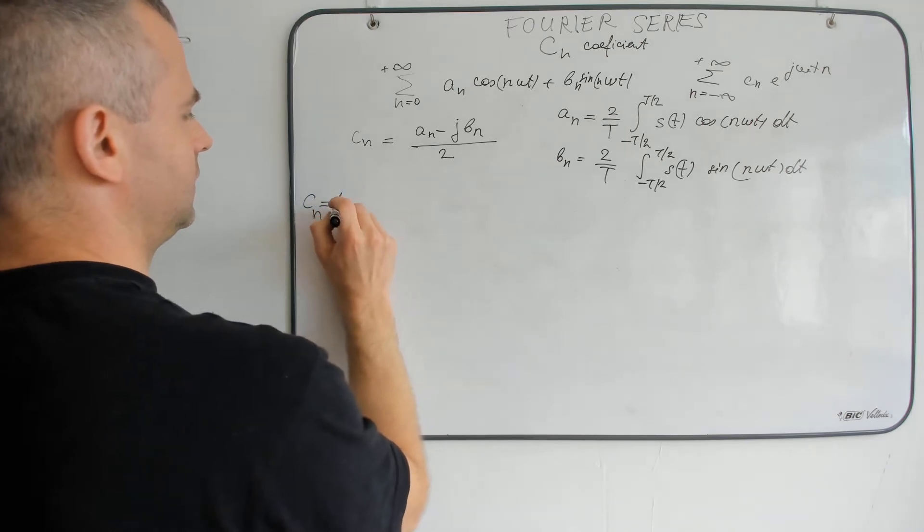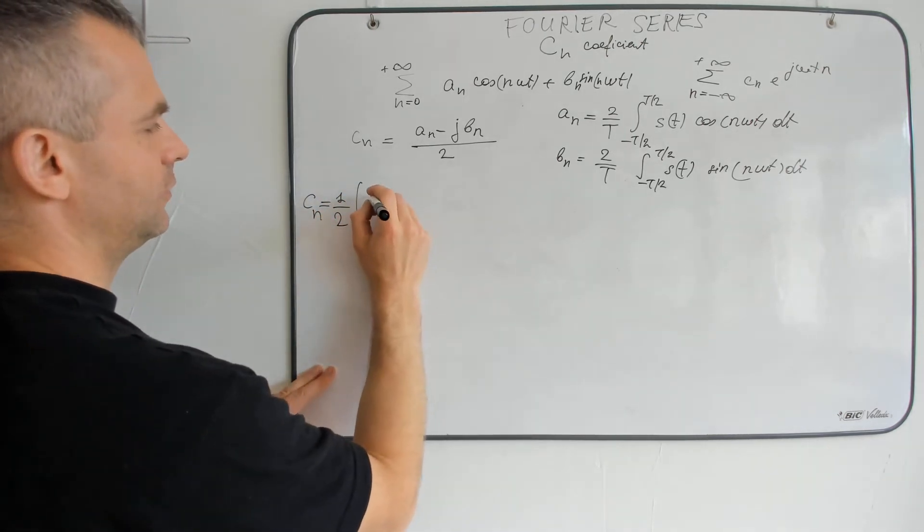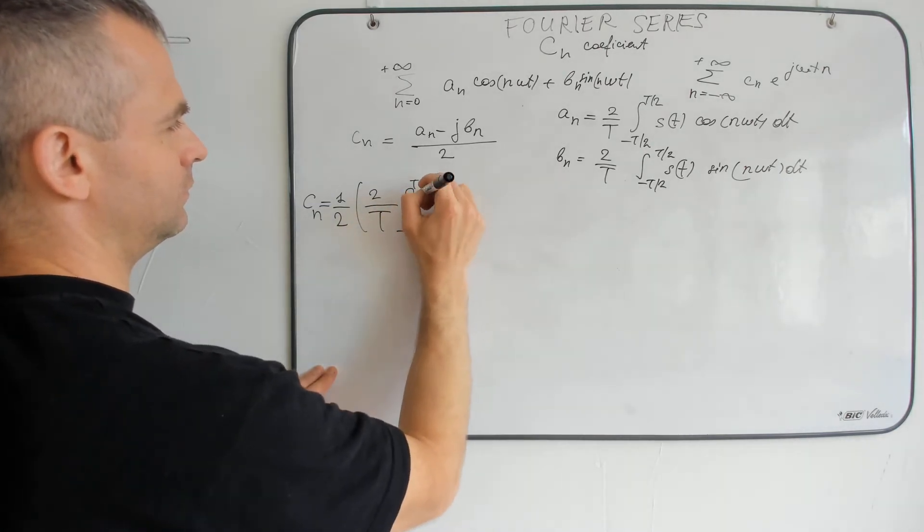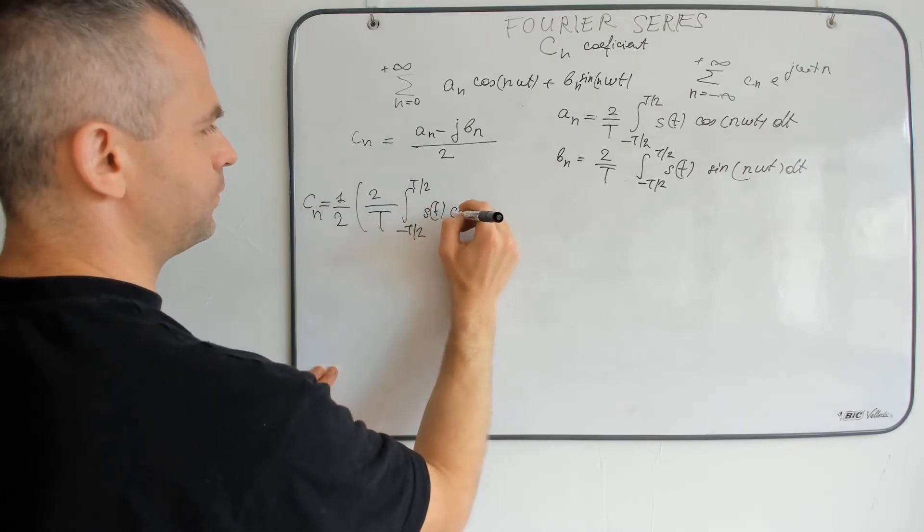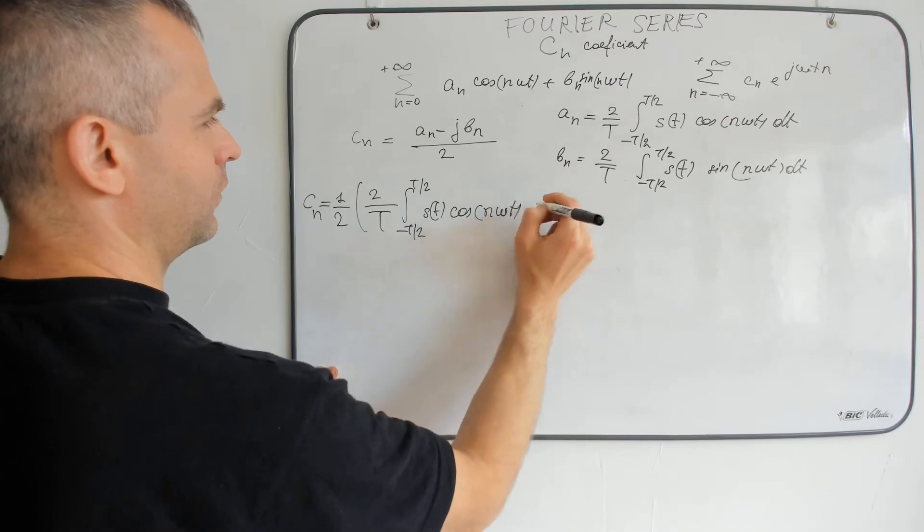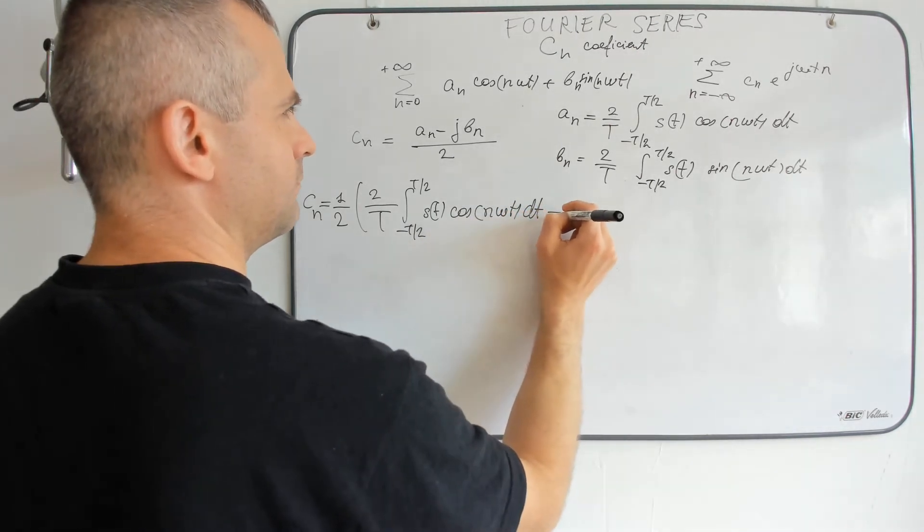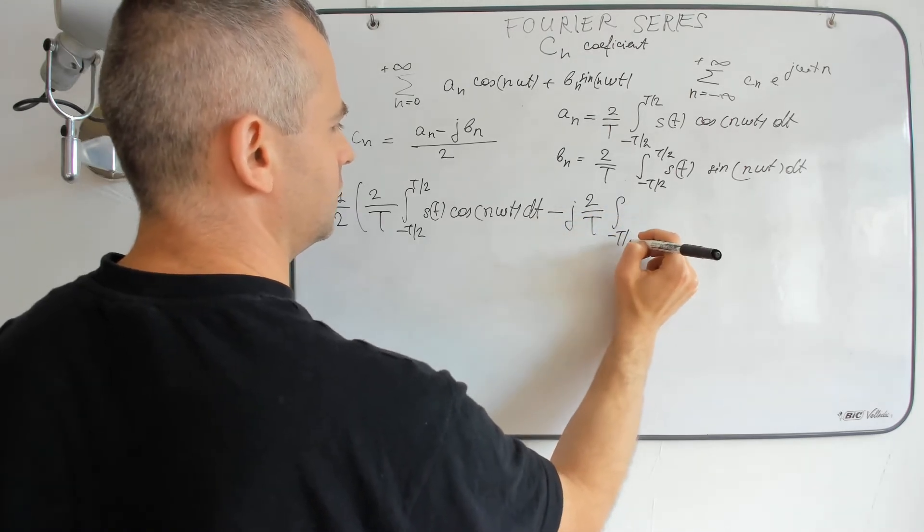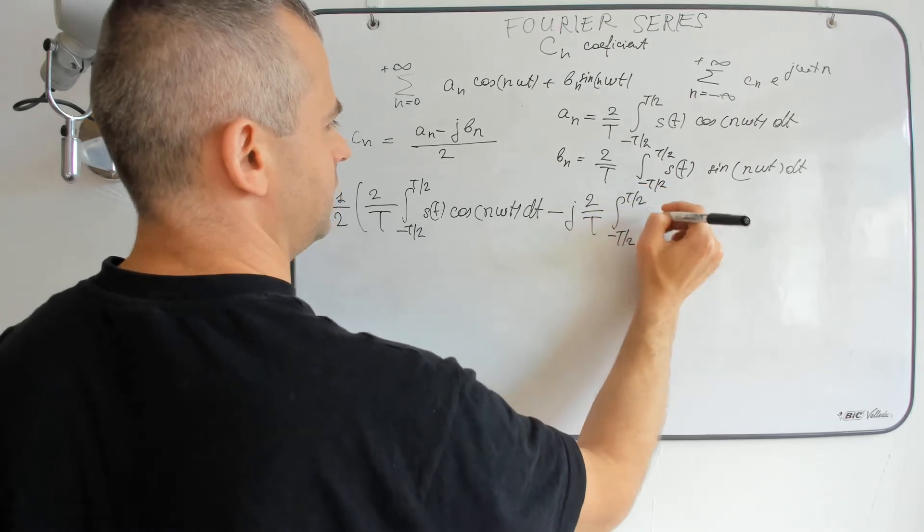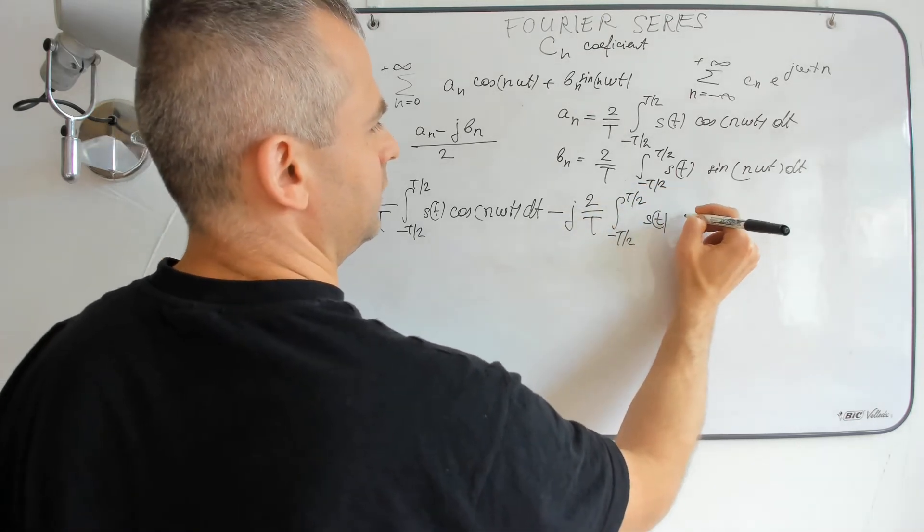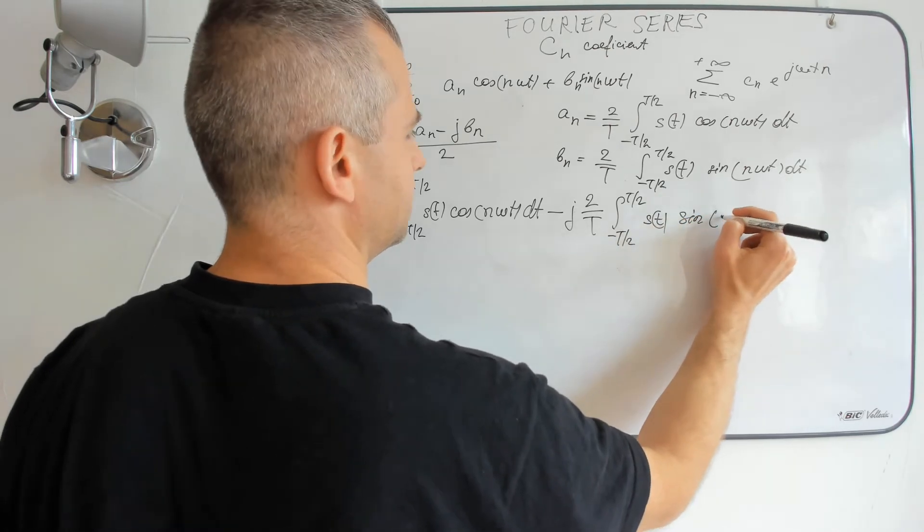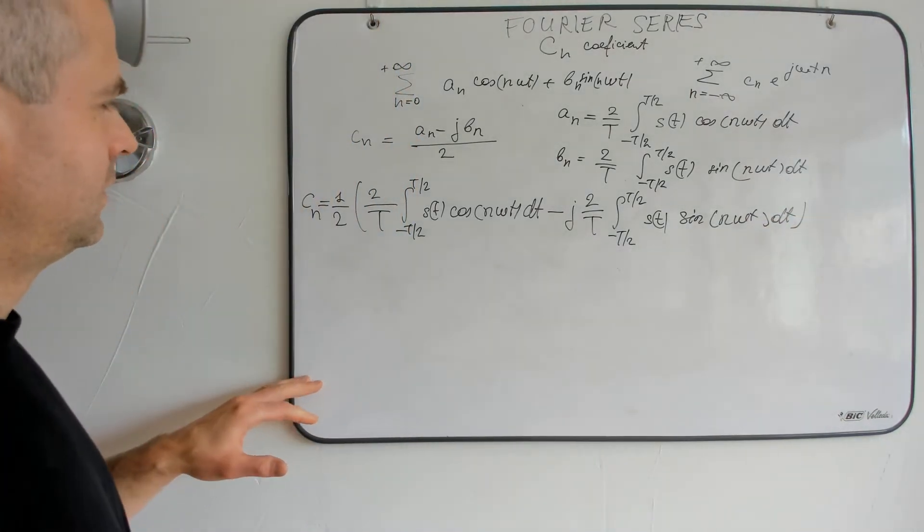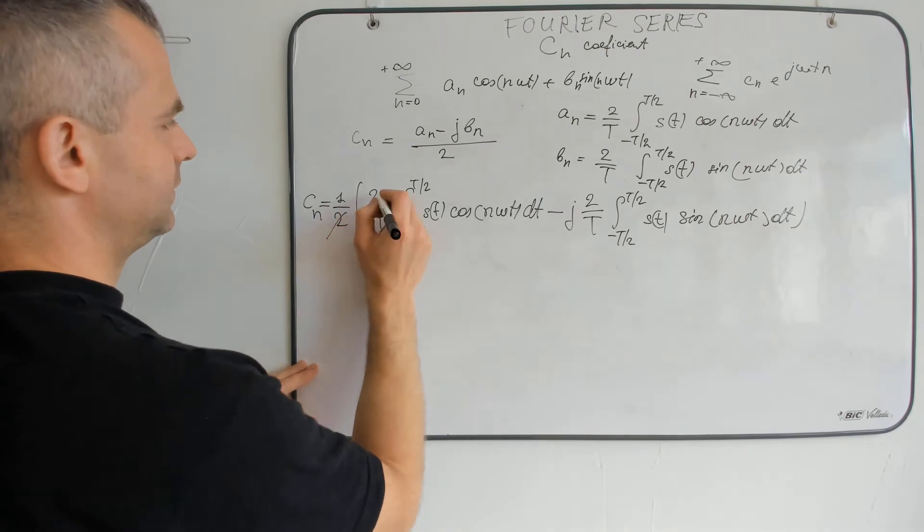So we get one-half multiplying the integral of cos terms minus j times the integral of s(t) sin(n omega t) dt. So here we have a substitution.